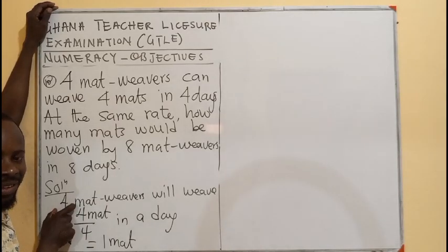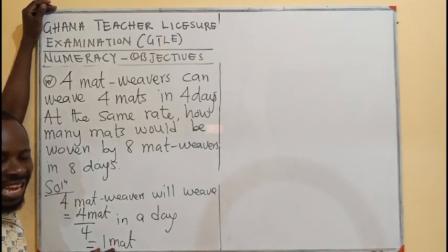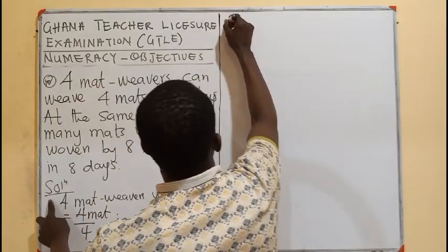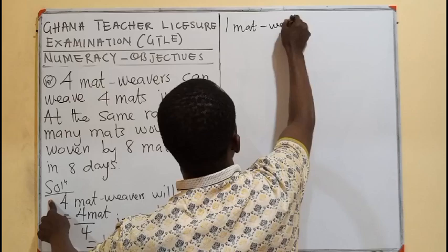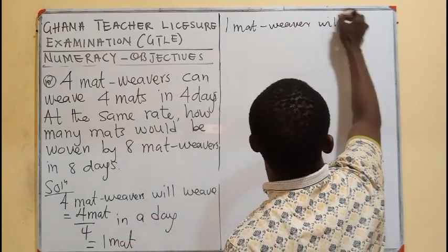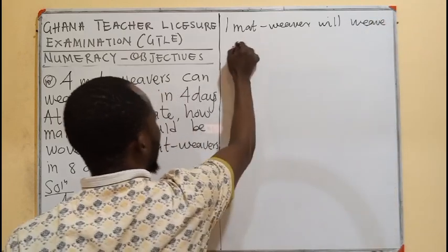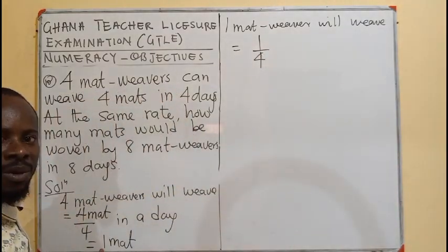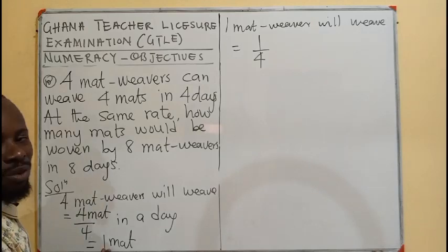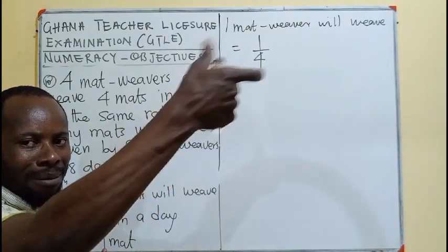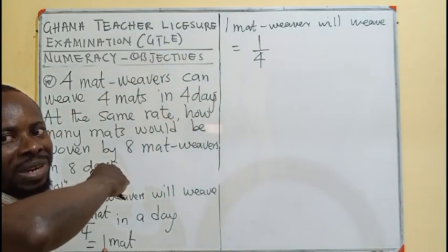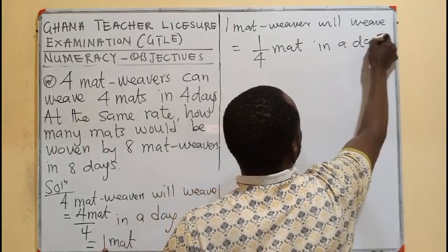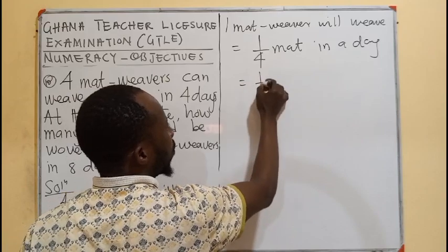If the four are working together at the same rate, they are able to weave only one in a day. So, how many is one person weaving? One mat weaver will be weaving the one mat that all of them are weaving divided by all of them. Four of them are weaving one. So, now only me, I will be dividing the one mat by four and I will take one part of it as one quarter. So, this is going to be one out of four mats in a day.